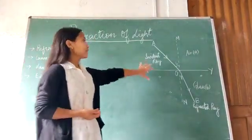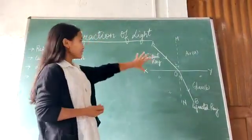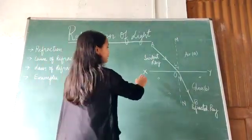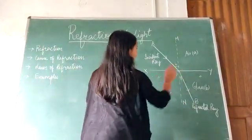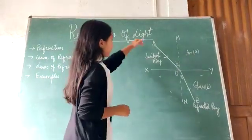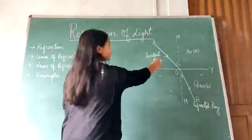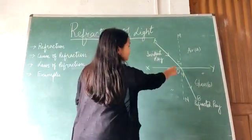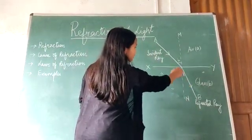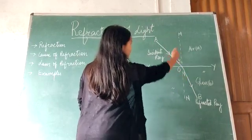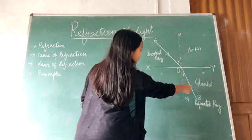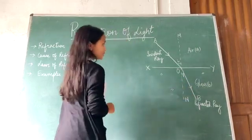And in this diagram that I have drawn, it shows the phenomenon of refraction of light at this plane surface XY. Here a ray, which is the incident ray, is incident on this glass surface at this point O. As it passes through this glass, this will bend, it will bend towards this normal MON. And it will follow this path OB, which is the refracted ray.